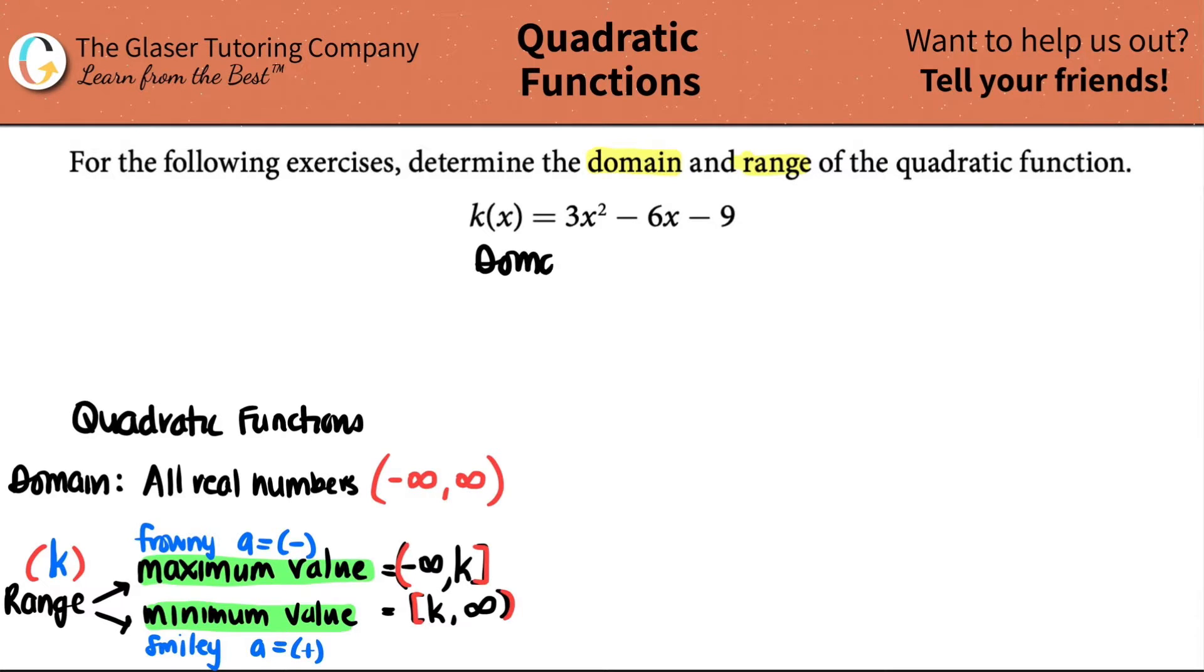We know that since this is a quadratic, the domain is going to be all real numbers. You could either state that by saying negative infinity all the way to positive infinity, parentheses, because it's just a theoretical concept, so it doesn't really exist. Or you could see this like double R thing. That means all real numbers as well. That just depends on what your professor wants.